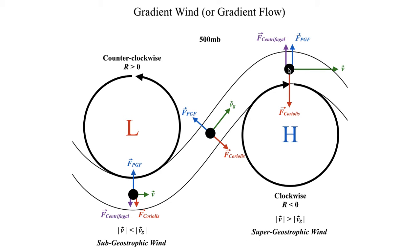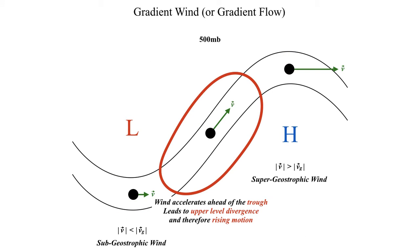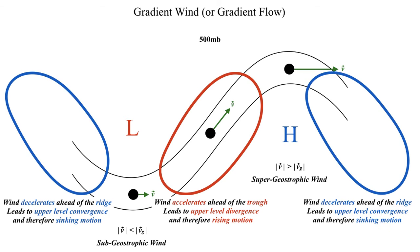Since wind accelerates from the weak trough base to the strong ridge apex, this causes upper-level divergence in the wind field, which results in rising motion. Conversely, as wind decelerates from the ridge apex toward the downstream trough, that results in upper-level convergence, which causes sinking motion.